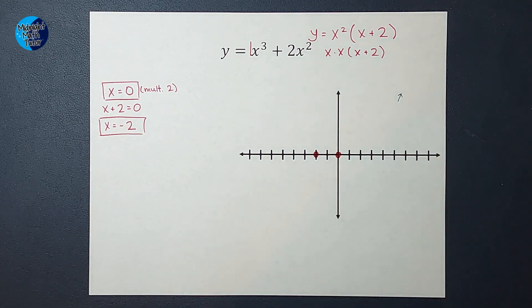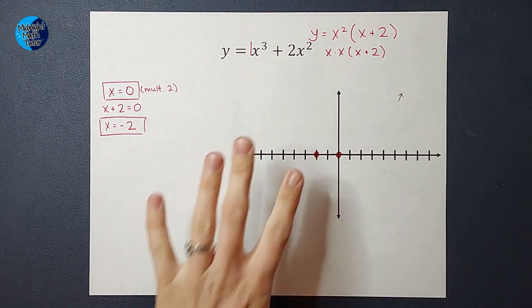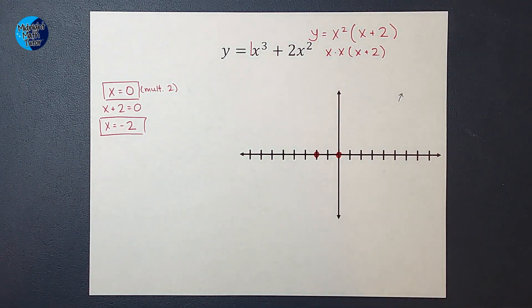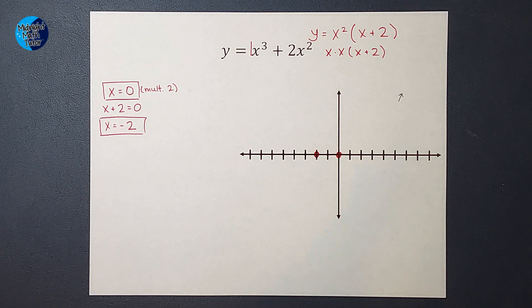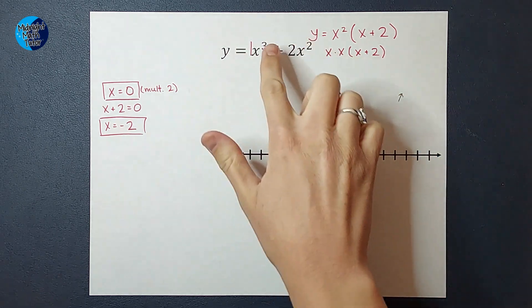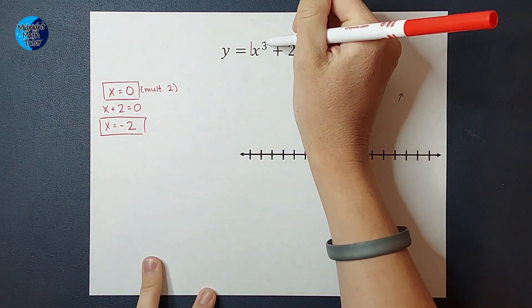Then we are going to look at the left side of our graph. Does this side go up or down? For our left side, we look at the degree, which is our exponents. When it's not factored out, when it's all together, what is my highest exponent? And we see here that it's three.